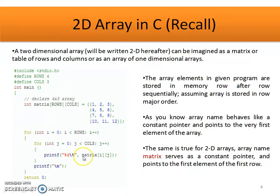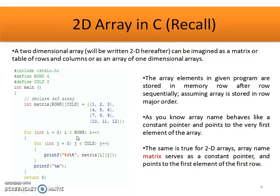To access the array elements, we use the name of the array with indices i and j. i represents the row index and j represents the column index. With nested for loops, the outer for loop works for rows and the inner for loop works for columns. In this way, we can access all array elements from our program and use the 2D array.